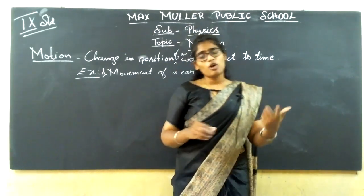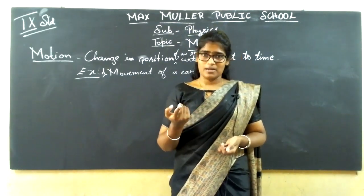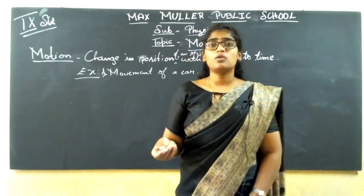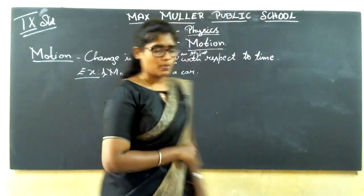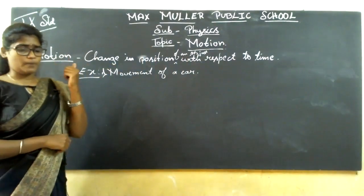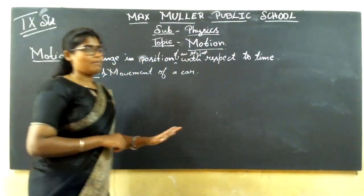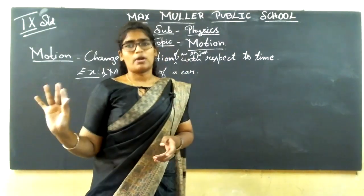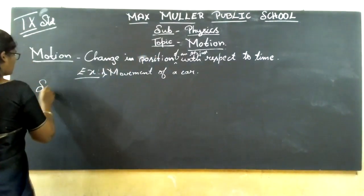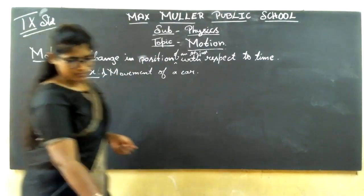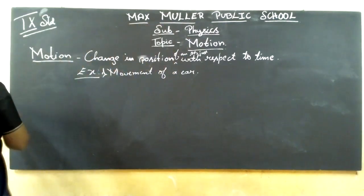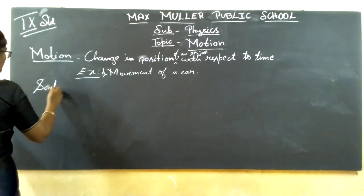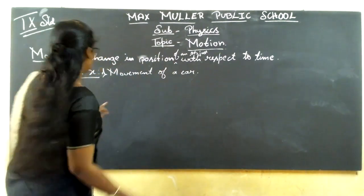Before going to distance, displacement, and motion in a straight line, I want to tell you about scalar quantity and vector quantity. The scalar is a quantity which has only magnitude and no direction. Direction is not important for scalar — only magnitude matters.